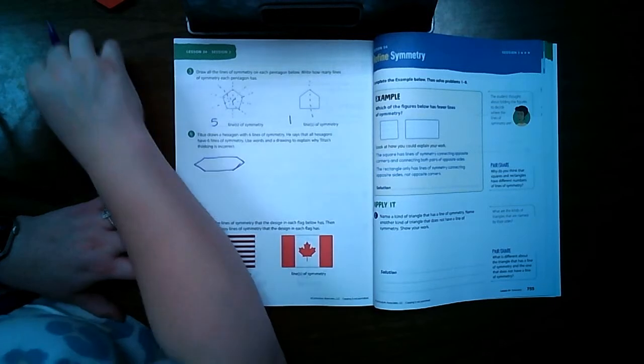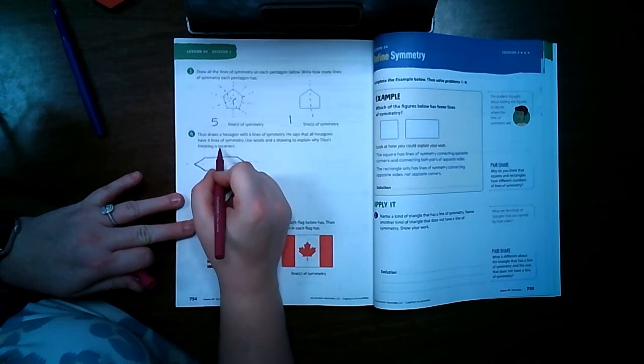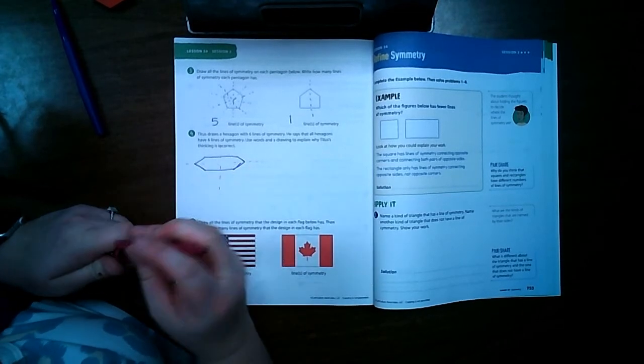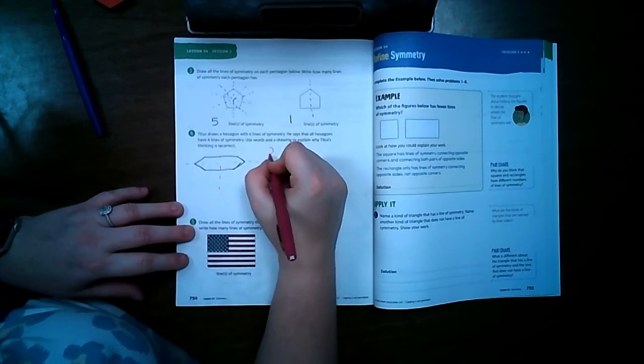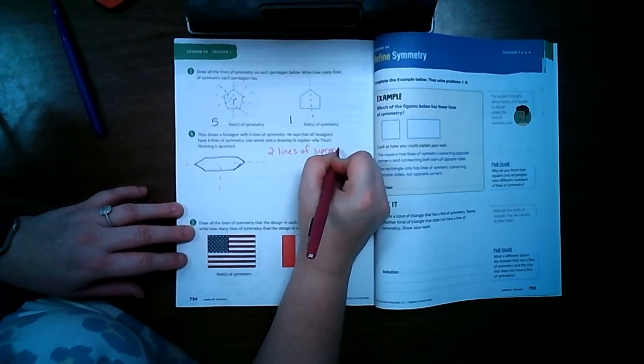And now this hexagon has one, two, but I can't do it any other way. So this one only has two lines of symmetry but it is a hexagon. So that is why Titus is incorrect.